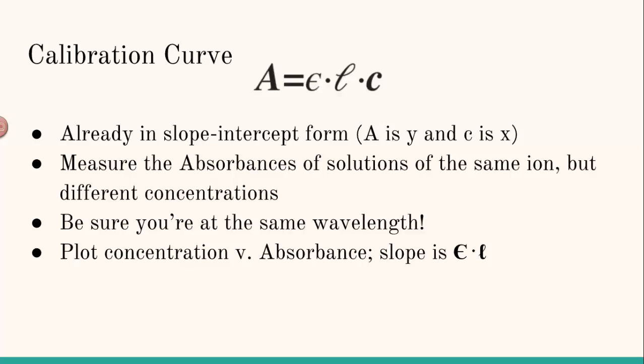And you have to do this at the same wavelength. Which wavelength do you use? Well, if you remember in the spectrophotometry lecture, we talked about finding the ideal wavelength, the wavelength that that species has the highest absorbance at. So you do all of your concentration variations and observe their absorbance at the same wavelength, and then you plot it. Concentration on the X axis, absorbance on the Y axis, and you find the slope of the line. The slope of the line is epsilon times L.